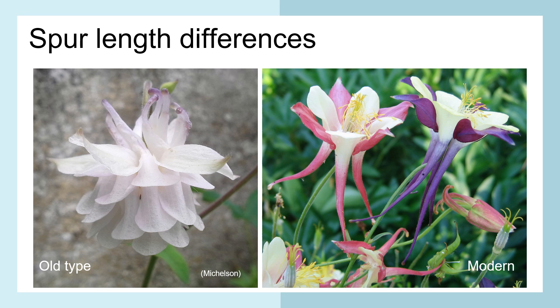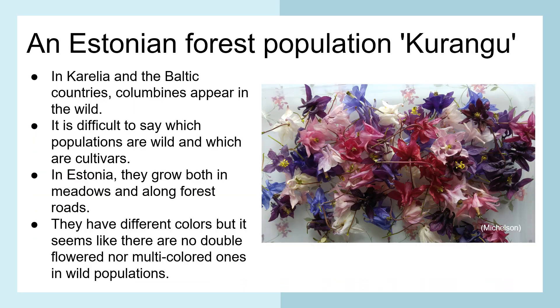To the left you can see perhaps an old cultivar type with very short spurs and a double flower with a lot of petals. Here is a more modern variety to the right. An Estonian forest population — Karukann. In Karelia and the Baltic countries Columbines appear in the wild. It is difficult to say which populations are wild and which are cultivars. In Estonia they grow both in meadows and along forest roads; they have different colors, but it seems like there are no double-flowered nor multicolored ones in wild populations.